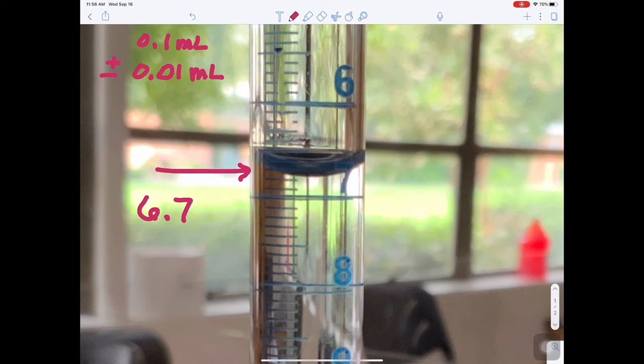And then we're going to estimate between the lines. Some people can do this to plus or minus 0.01. Some people just go to plus or minus 0.05. The important thing is that you have two decimal places.